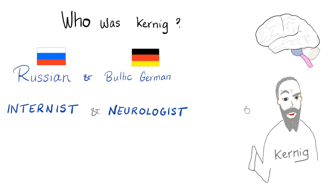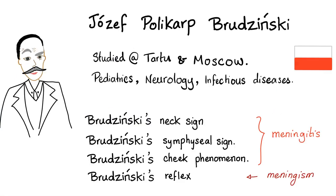I've told you about Vladimir Mikhailovich Kernig in the previous video — he studied in Moscow. Today it's time for Jozef Polikar Brzezinski, a Polish pediatrician, neurologist, and infectious disease expert. He also studied in Moscow. I would not be shocked if he went to the same school as Kernig — these people were sitting in the same kitchen while discovering this stuff.